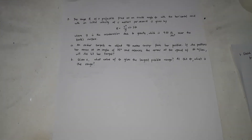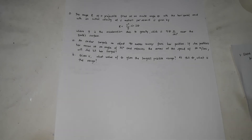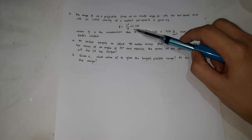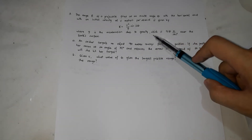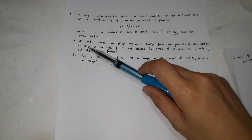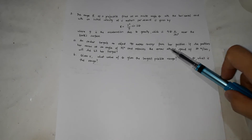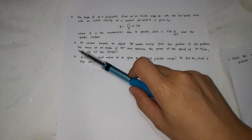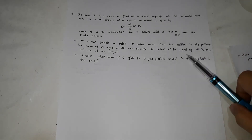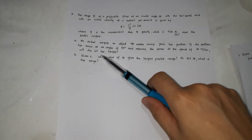We'll proceed with the second problem. The range R of a projectile fired at an acute angle θ with the horizontal and with initial velocity V meters per second is given by R = V²/G · sin(2θ), where G is the acceleration due to gravity, 9.81 m/s² near Earth's surface. An archer targets an object 90 meters away, positions her arrow at 32° and releases it at 30 m/s — will she hit the target?